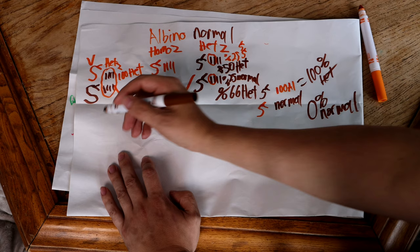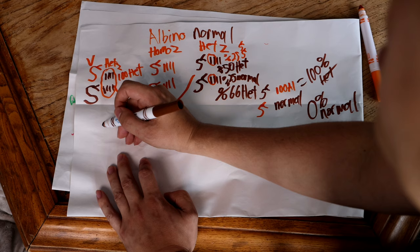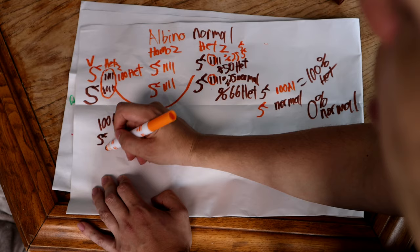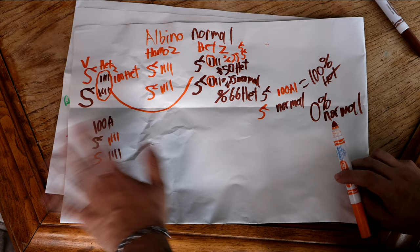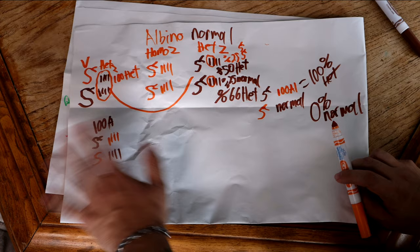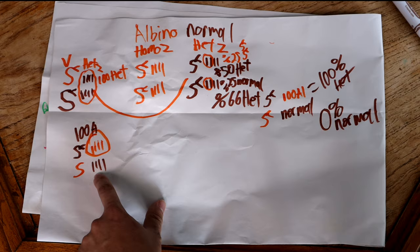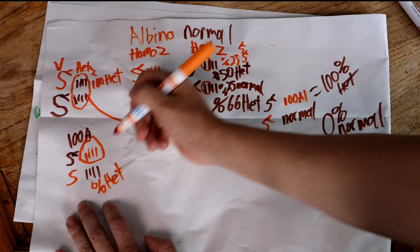Let's run that breeding again. If you take a snake that is 100% het and breed it to a visual albino, it doesn't matter — they're all going to be carrying the gene. The visual albino passes one copy of the gene to all of them, and the 100% het passes one copy to about 50% of them. So about 50% will end up being visual albinos, and the other 50% will be 100% het.